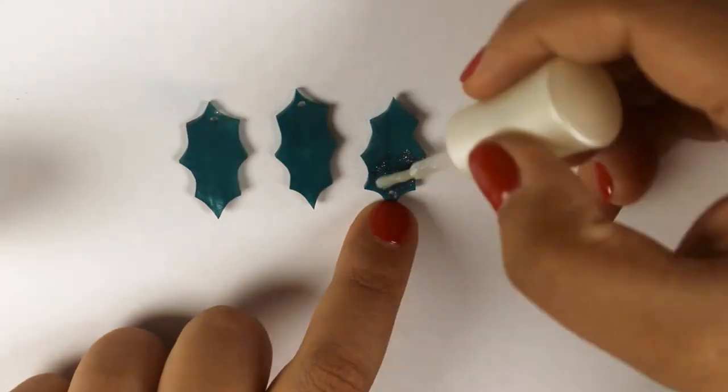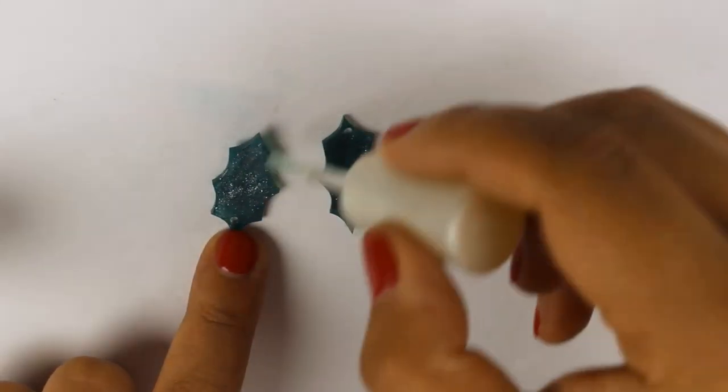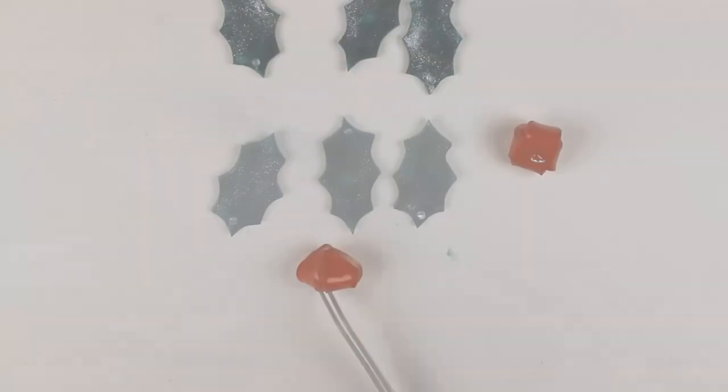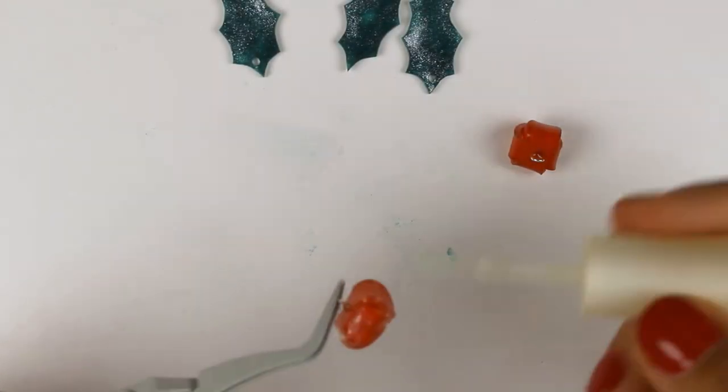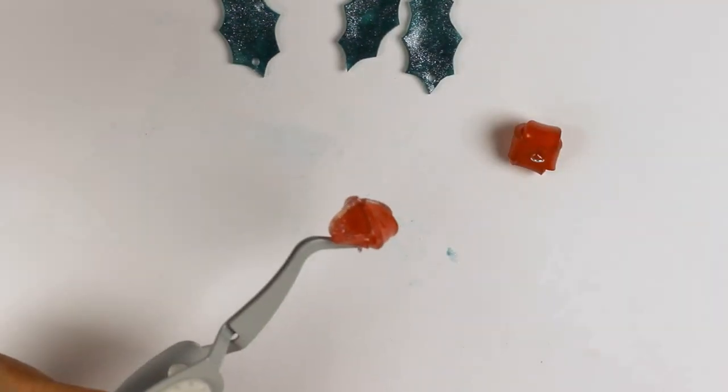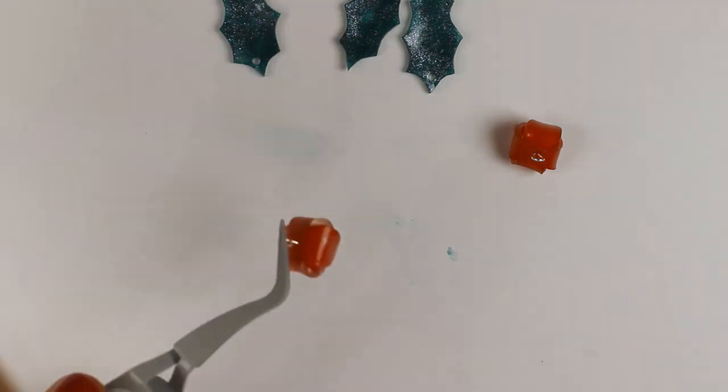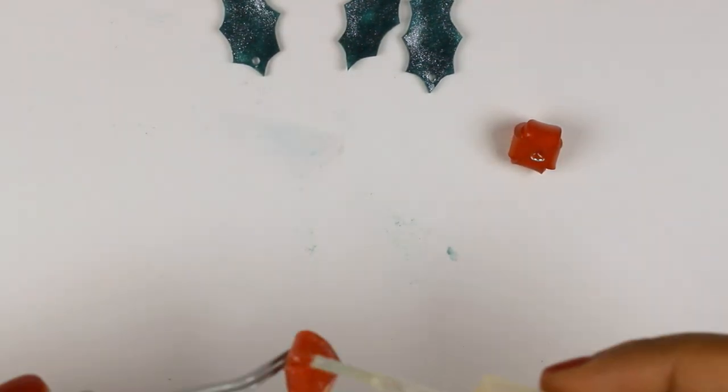We're going to add jump rings to the leaves, but before we do that I am sealing the pastels in with some glitter nail varnish. You can use resin and cure that as well, but I'm using whatever I had on hand which is glitter nail varnish. You can add glitter and a glue mixture as well.